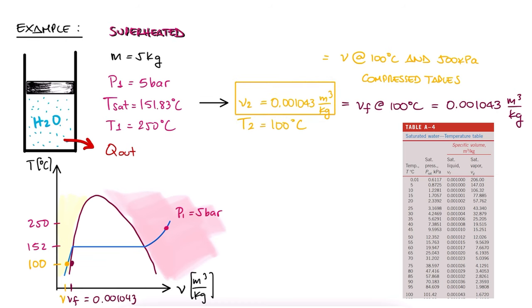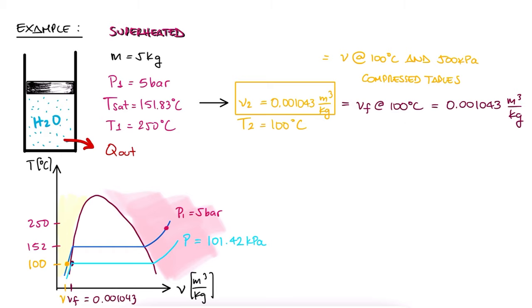Just to review what we're stating, sure, this value is really only true for 100 degrees Celsius and 101.42 kilopascals. But since what we found is that increasing the pressure barely changes the specific volume, 101.42 or 500 kilopascals won't make the specific volume increase by much.